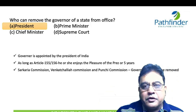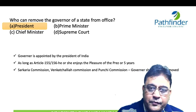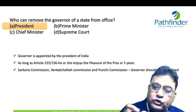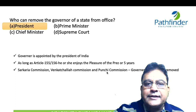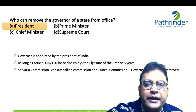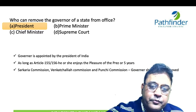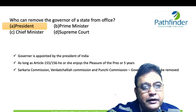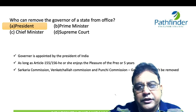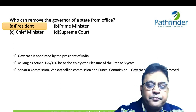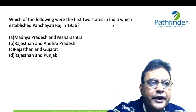The Sarkaria Commission, Venkatachaliah Commission, and Punchhi Commission all said that Governors should not be removed except in very rare cases, and should be allowed to complete five years. The Punchhi Commission even recommended eliminating the phrase 'as long as he enjoys the pleasure of the President.' So far this has not happened. The last time Governors were removed arbitrarily was in 2010 and around 2015.